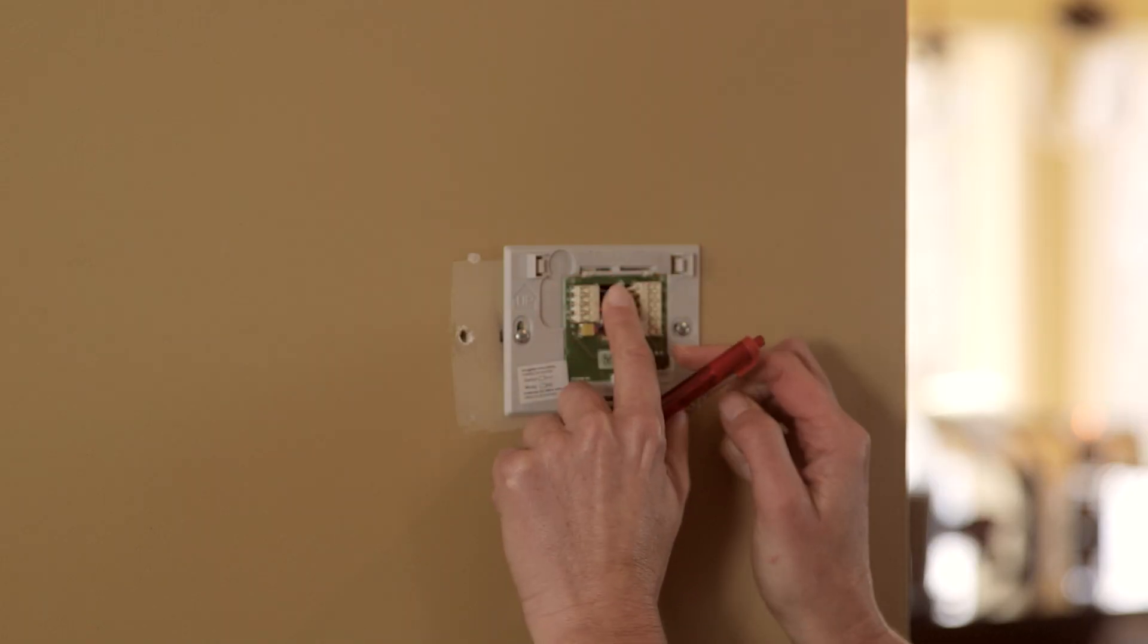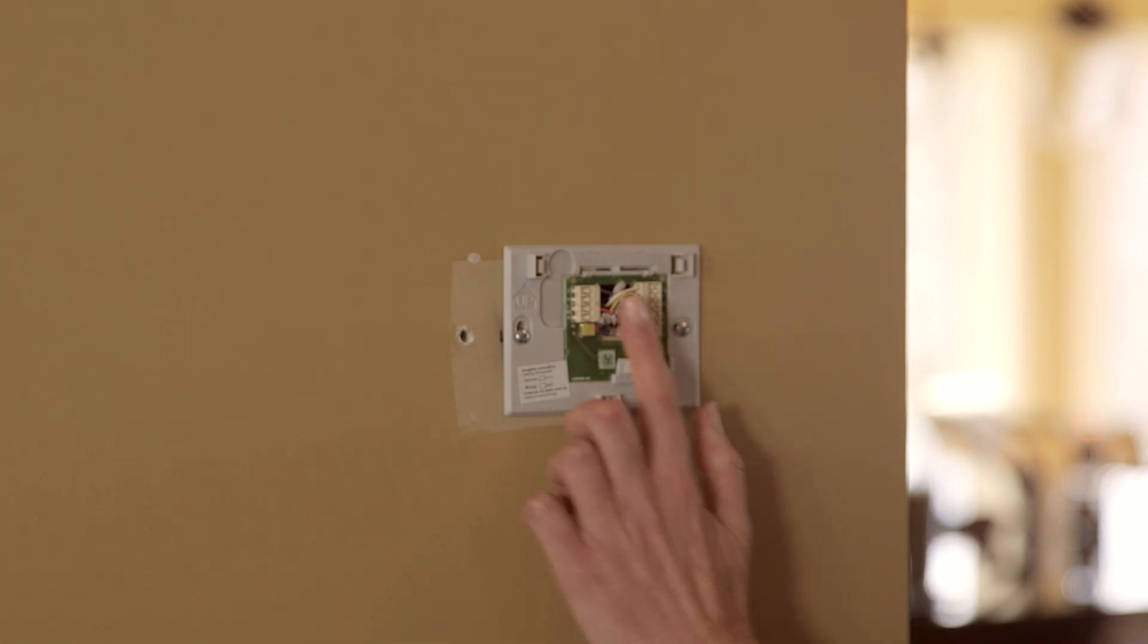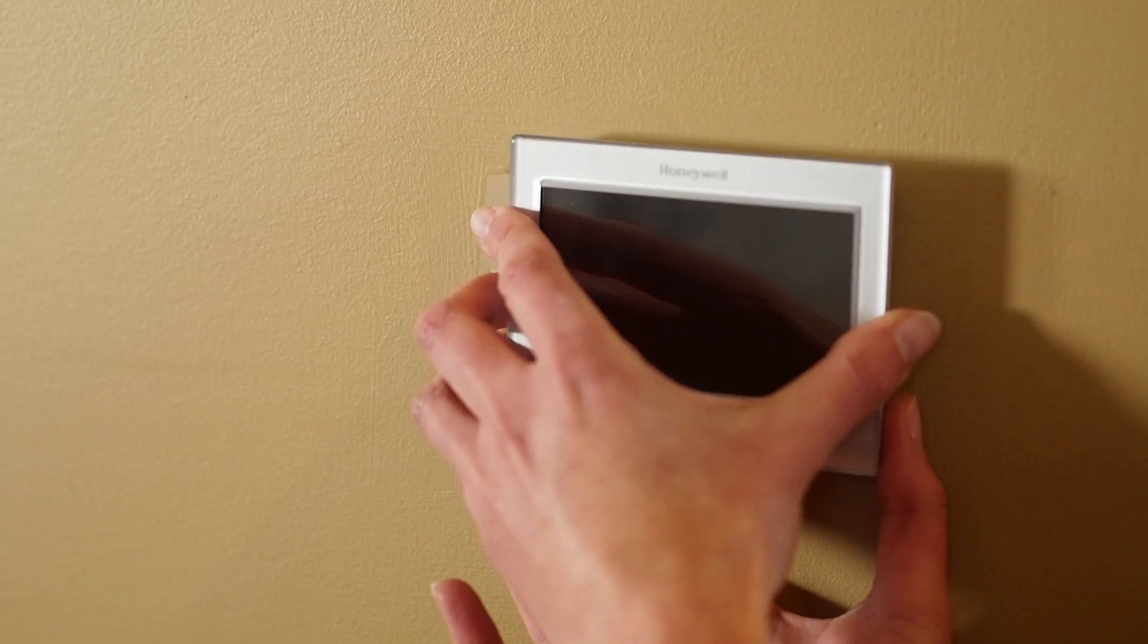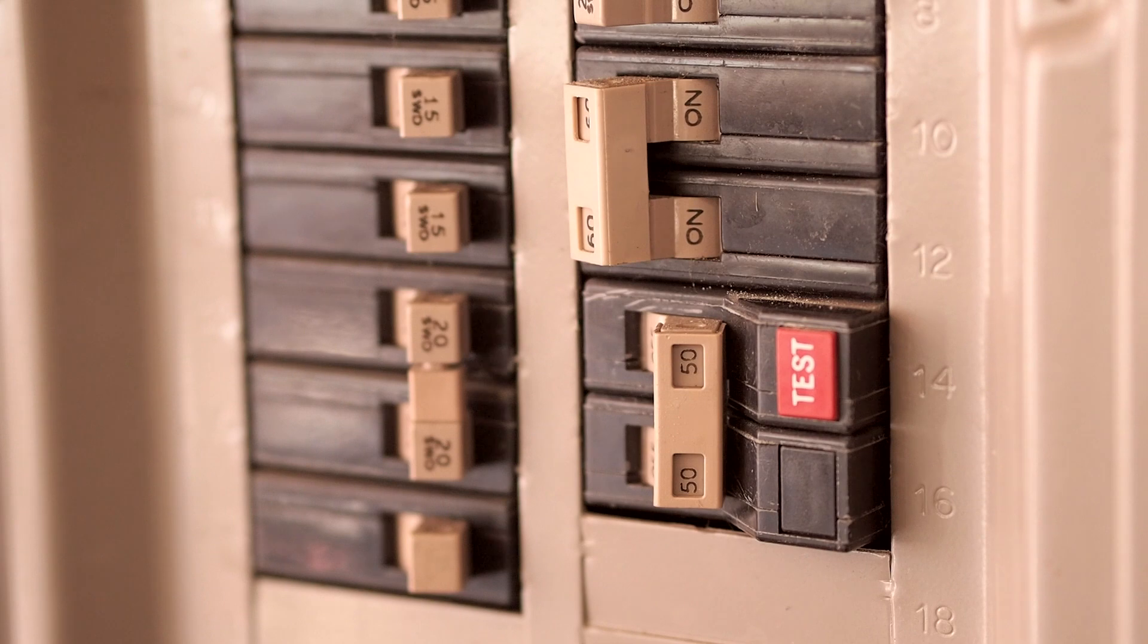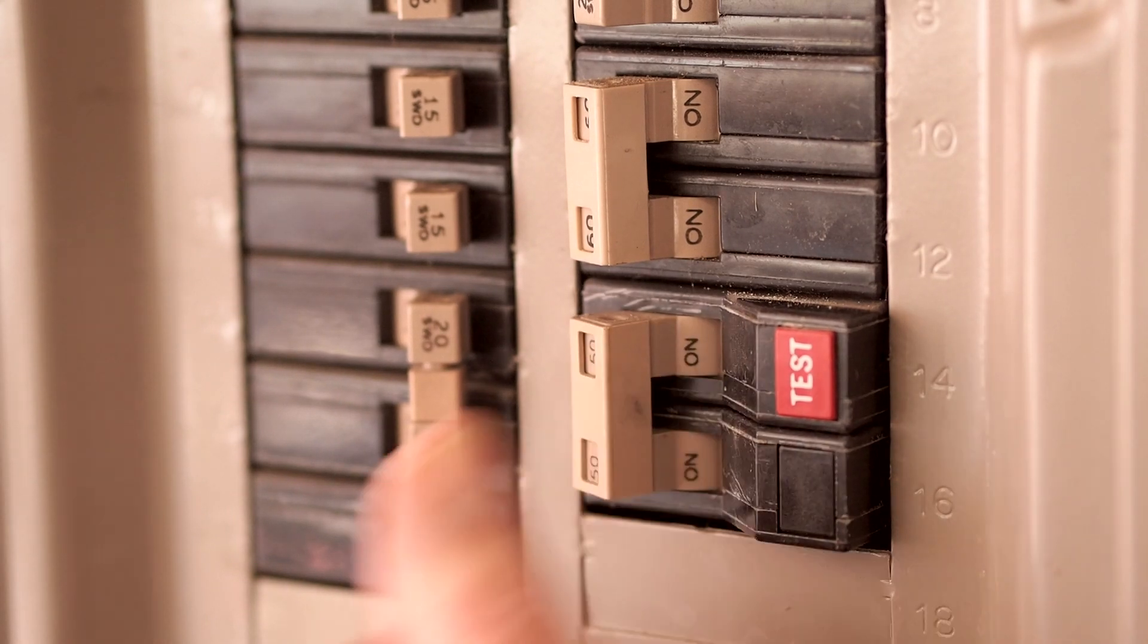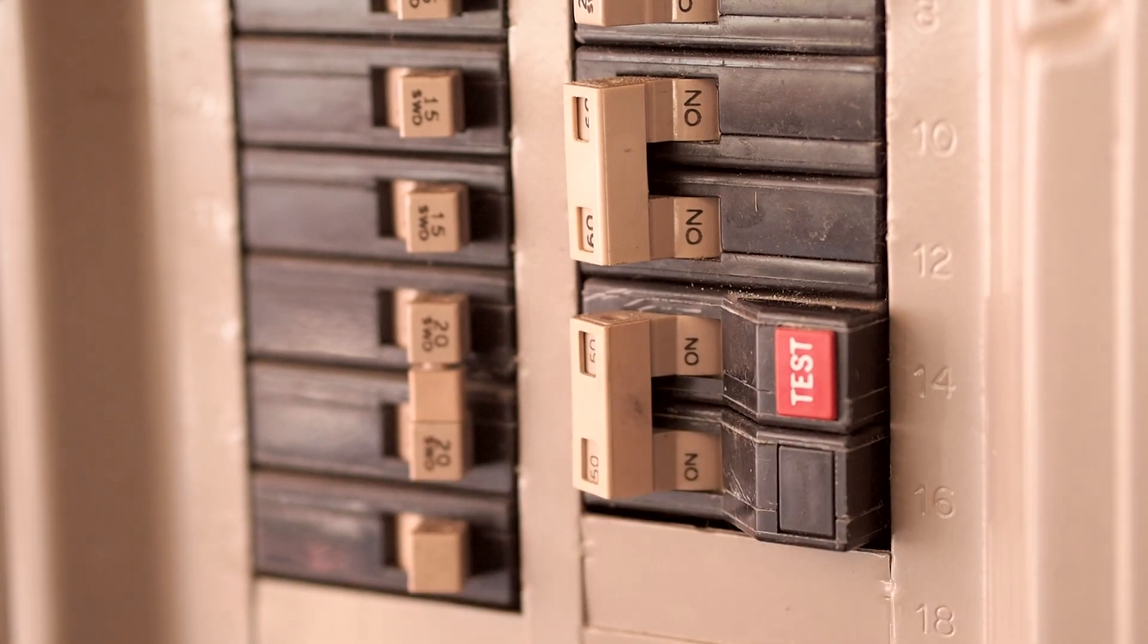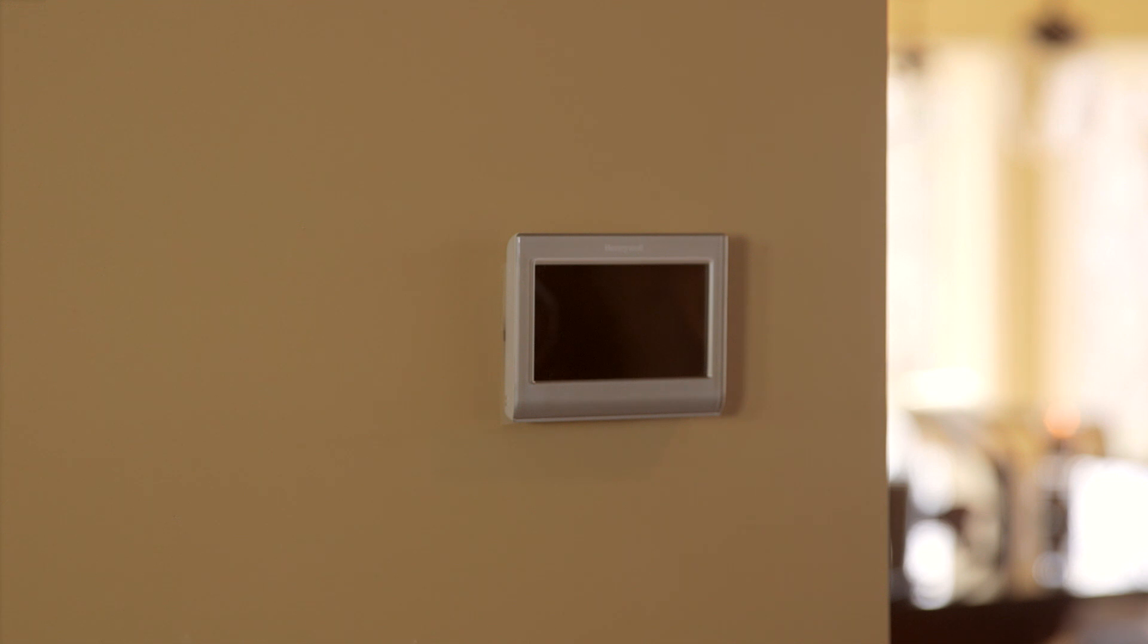After you've finished connecting all the wires, push any excess wire back into the wall opening. Align the thermostat with the wall plate and snap it into place. Switch the power back on for your heating and cooling system at the circuit breaker box or the system switch. This should power up your thermostat's display to begin the initial setup.